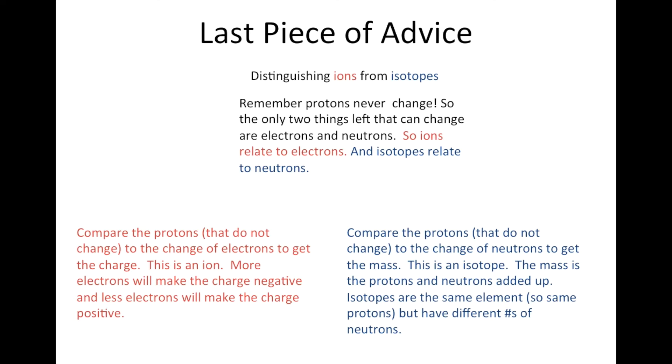Lastly, my last piece of advice. Sometimes we distinguish ions from isotopes and it's a little bit challenging. Remember, protons never change. That's the identity of the element. So the only two other things that can change are going to be electrons and neutrons. Ions relate to electrons and isotopes relate to neutrons.